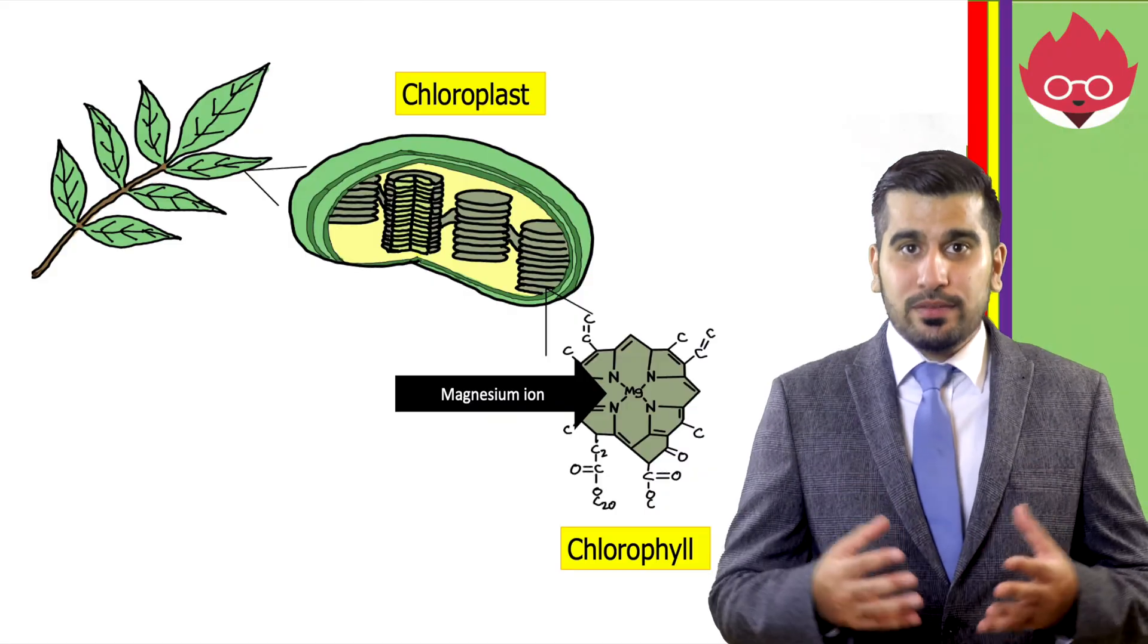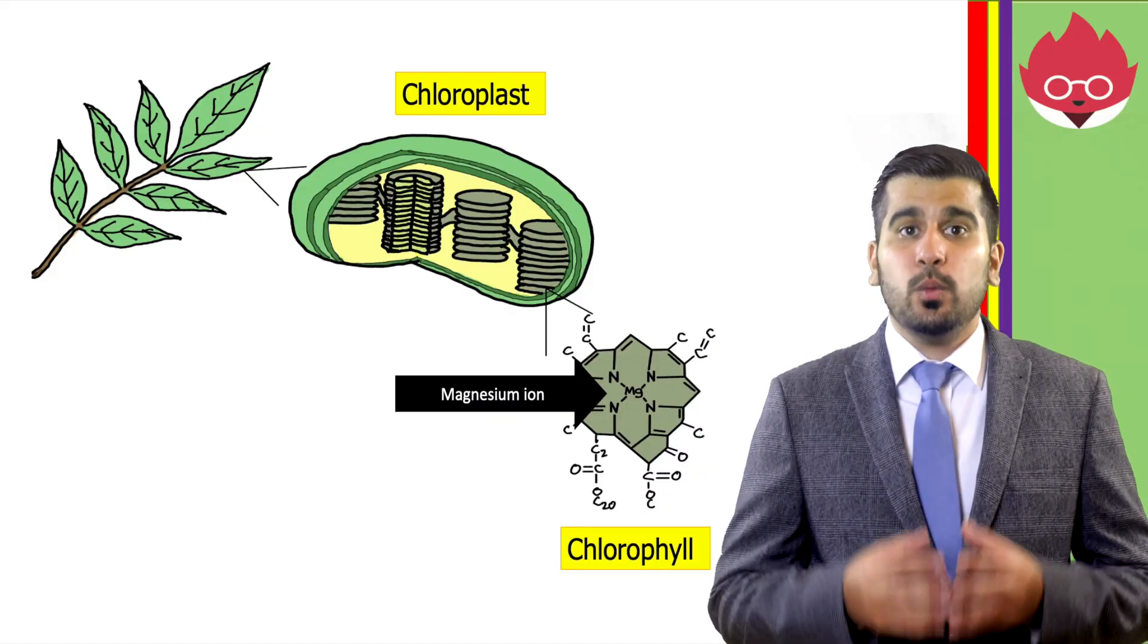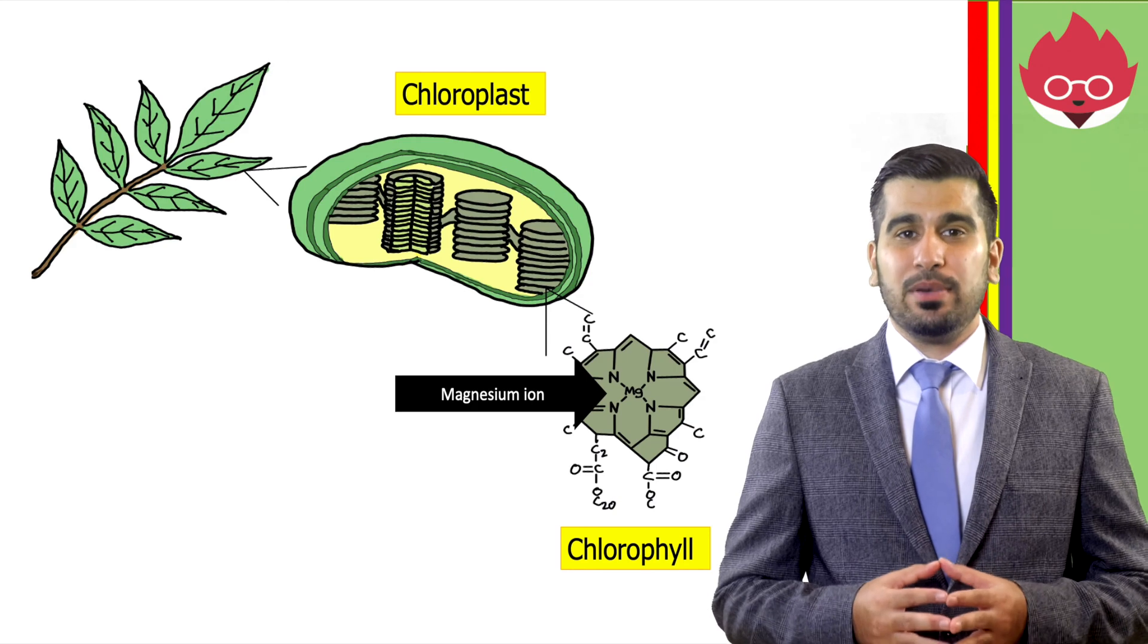For question 3, two examples you would have studied at Key Stage 4 are: Firstly, nitrate ions, which are used in plants to make DNA and amino acids. And secondly, magnesium ions, which are used to make chlorophyll in plants.